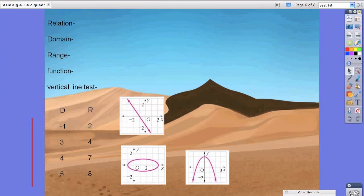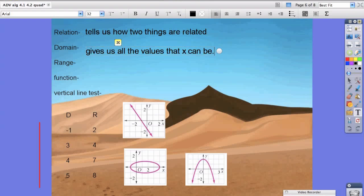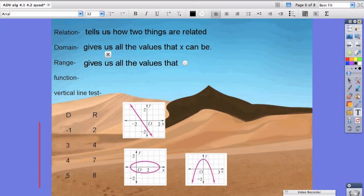A relation tells us how two things are related. The domain gives us all of the values that x can be. The range gives us all of the values that y can be.